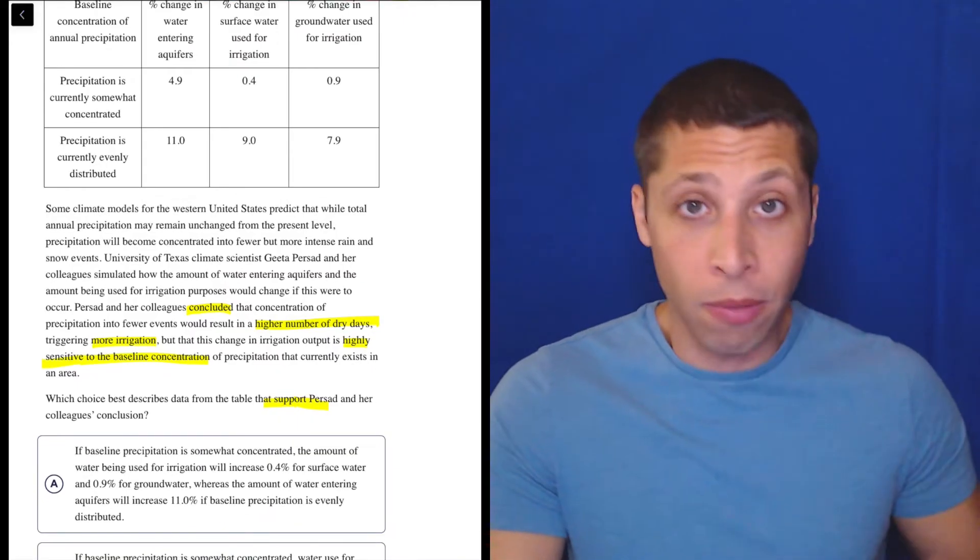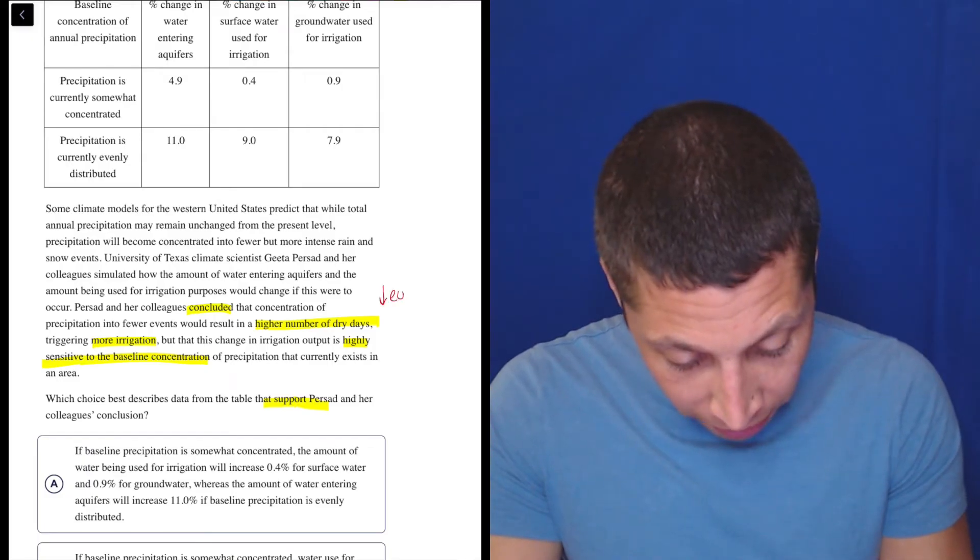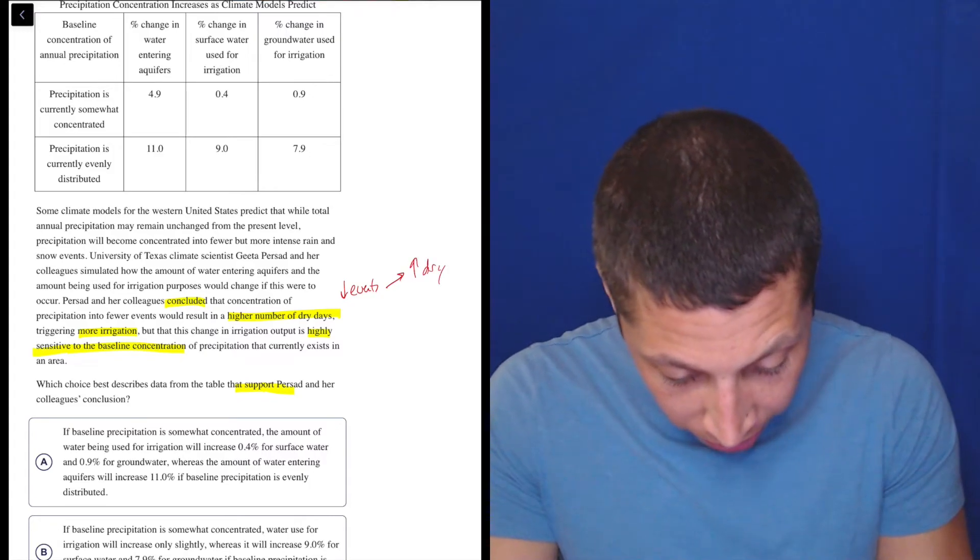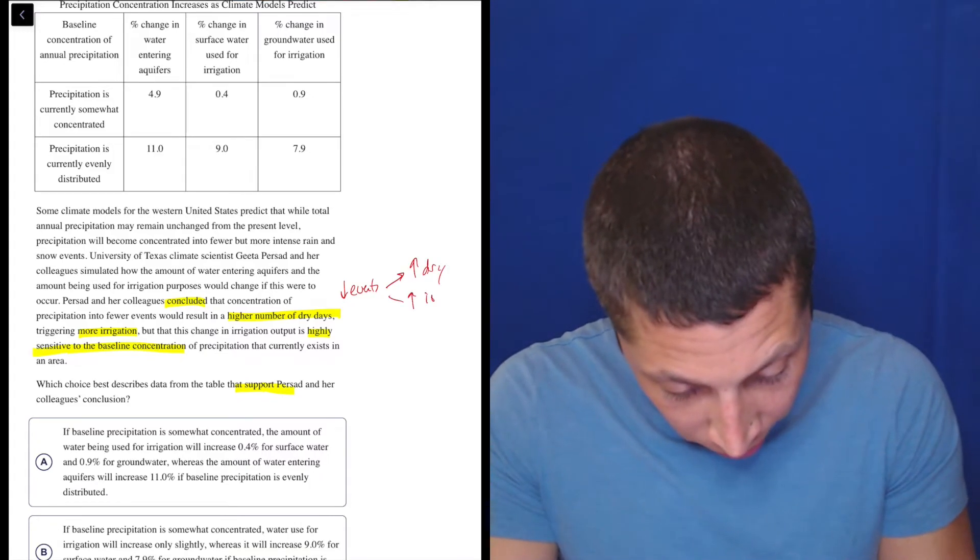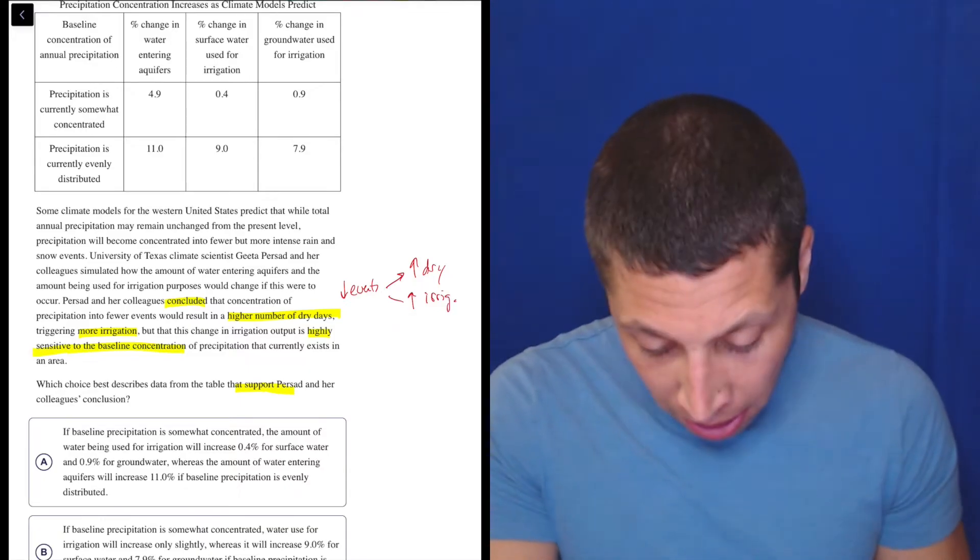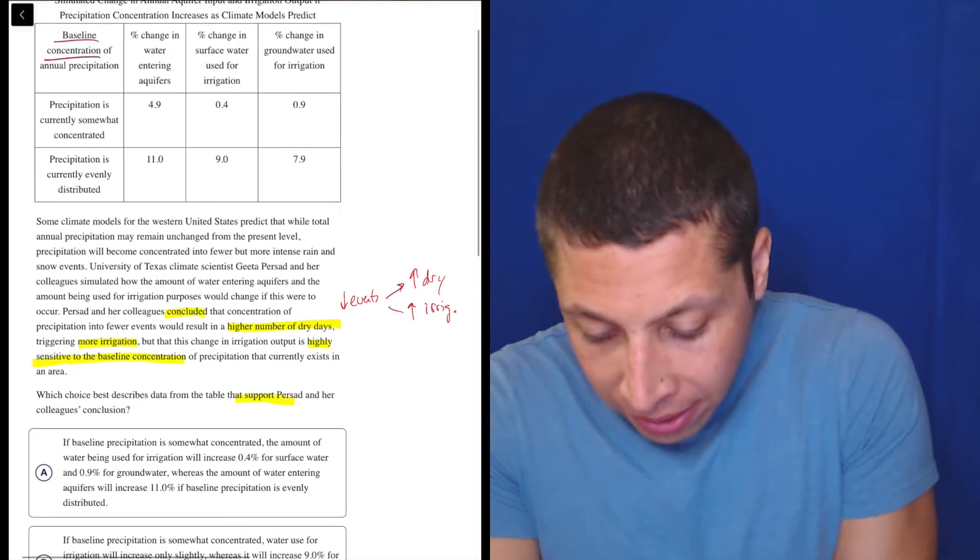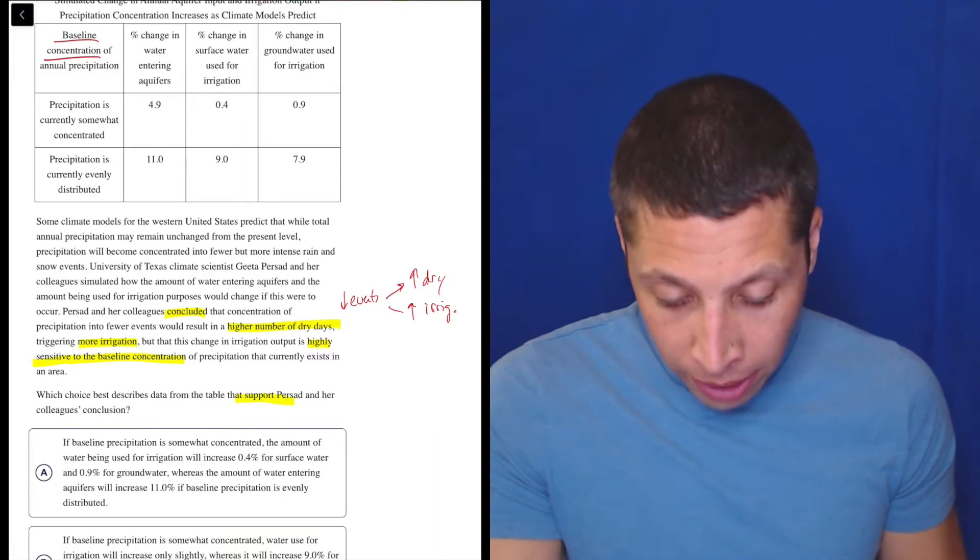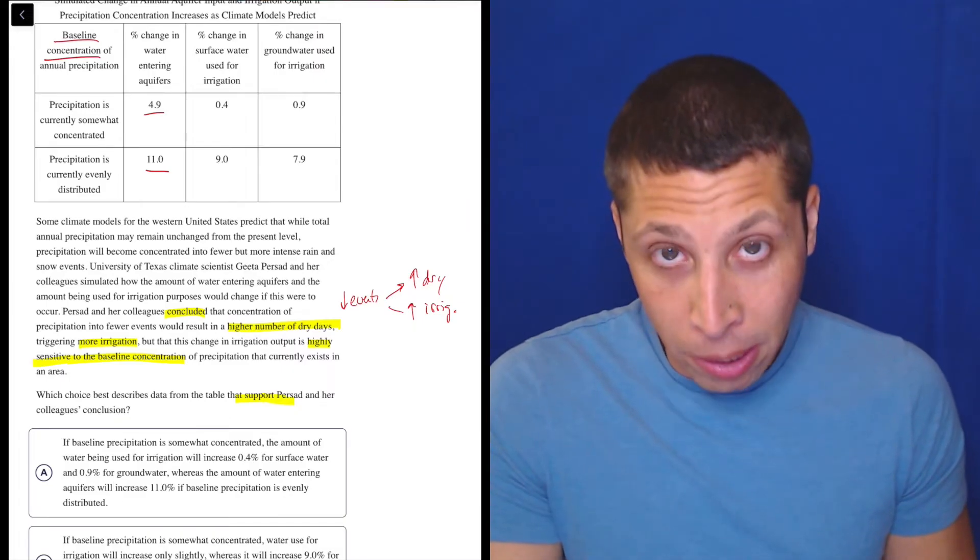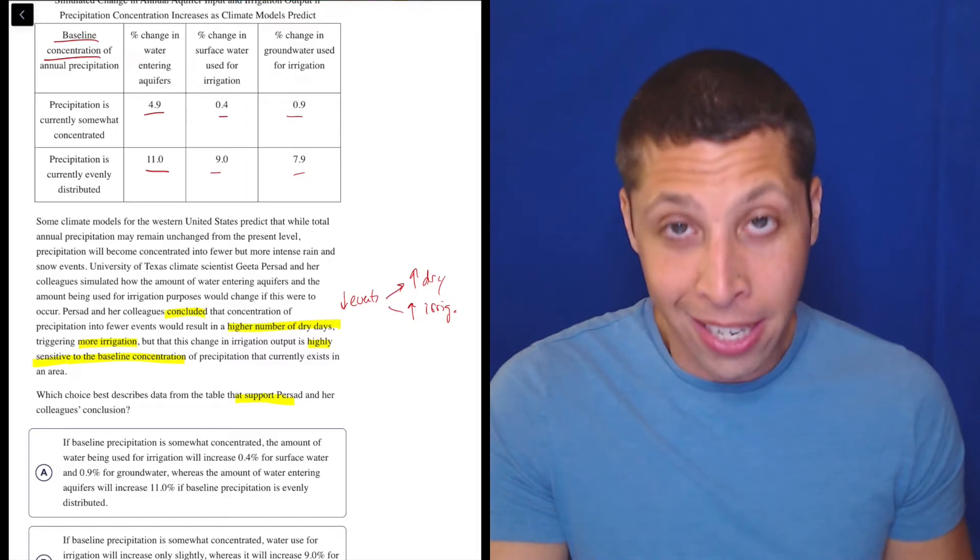Here it is. Persad and her colleagues concluded that concentration of precipitation into fewer events would result in a higher number of dry days triggering more irrigation, but that this change in irrigation output is highly sensitive to the baseline concentration of precipitation that currently exists in an area. So there's two conclusions. There's one that's very traditional: we have fewer events so we're gonna get more dry days and more irrigation. Cool. That's the normal kind of ups and downs we think about. But then it also says that's highly sensitive to the baseline concentration.